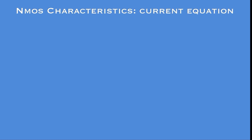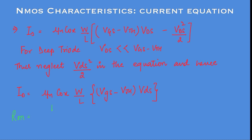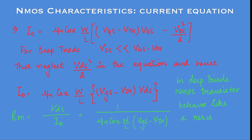Coming up to the equation in the deep triode mode: for the deep triode mode, VDS is very much less compared to VGS minus VTH, so the VDS²/2 term can be neglected. Thus ID equals μn·COX·(W/L)·(VGS minus VTH)·VDS. This equation shows that the nMOS transistor behaves like a resistor following Ohm's law, and from this you can derive the on-resistance RON, which is VDS/ID equals 1 divided by [μn·COX·(W/L)·(VGS minus VTH)].